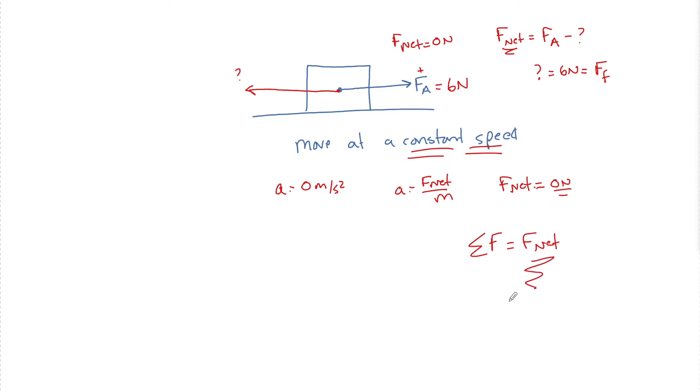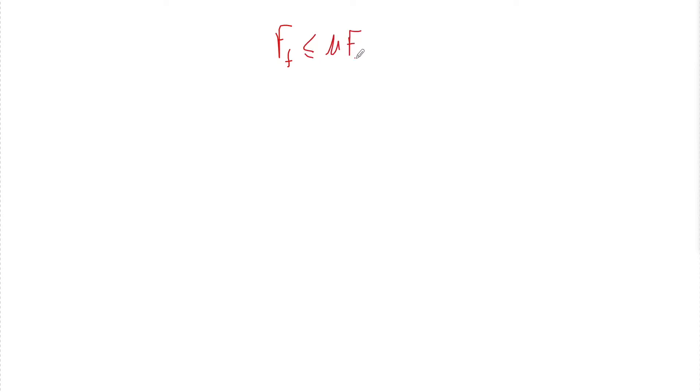This is why we love when an object is at a constant speed — because then we don't have to worry about using the formula for friction. But let's say we have to use the formula now. In its most specific sense, the force of friction is going to be less than or equal to mu times the force of the normal.